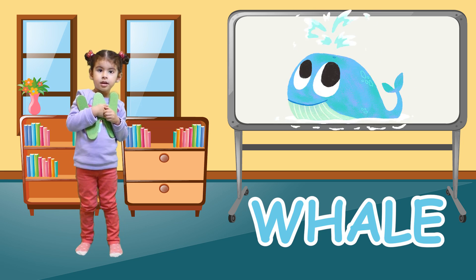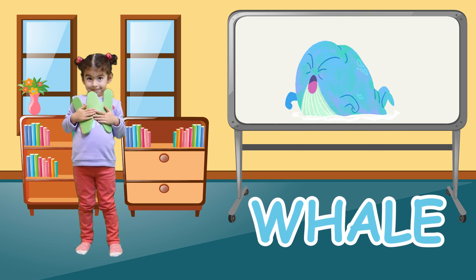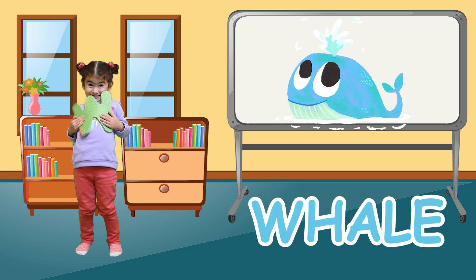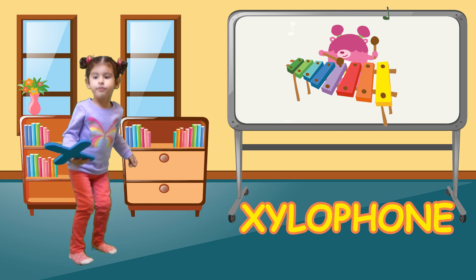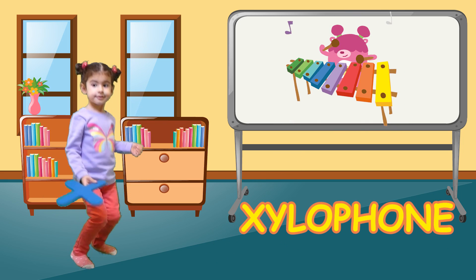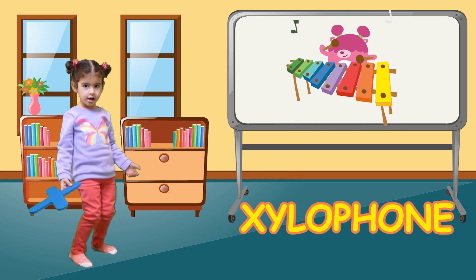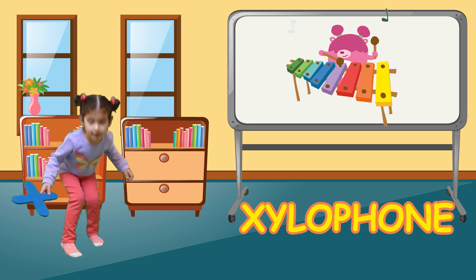W is for whale. W, whale, W, whale, W, whale. X is for xylophone. Z, xylophone, Z, xylophone, X, xylophone.